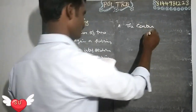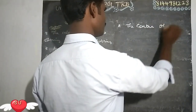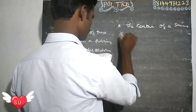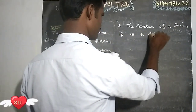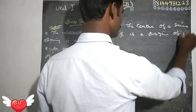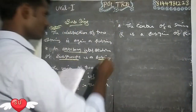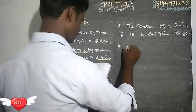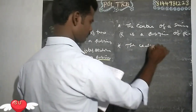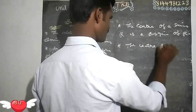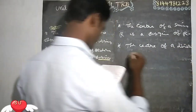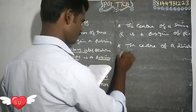The center of a ring R is a subring of R.